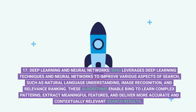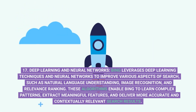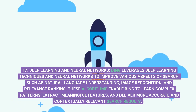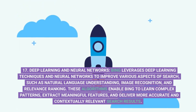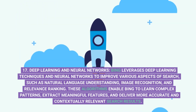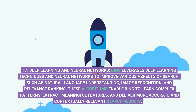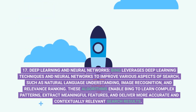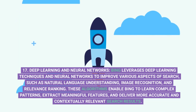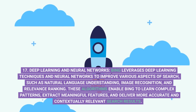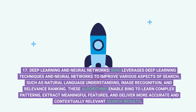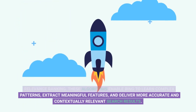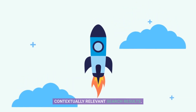17. Deep Learning and Neural Networks. Bing leverages deep learning techniques and neural networks to improve various aspects of search, such as natural language understanding, image recognition, and relevance ranking. These algorithms enable Bing to learn complex patterns, extract meaningful features, and deliver more accurate and contextually relevant search results.